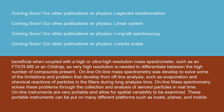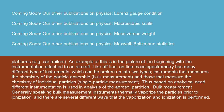Online mass spectrometry was developed to solve some of the limitations and problems that develop from offline analysis, such as evaporation and chemical reactions of particles in the filters during long analysis time. Online mass spectrometry solves these problems through the collection and analysis of aerosol particles in real time. Online instruments are very portable and allow for spatial variability to be examined. These portable instruments can be put on many different platforms, such as boats, planes, and mobile platforms like car trailers. Like offline, online mass spectrometry has many different types of instruments, which can be broken up into two types: instruments that measure the chemistry of the particle ensemble (bulk measurement) and those that measure the chemistry of individual particles (single particle measurement).